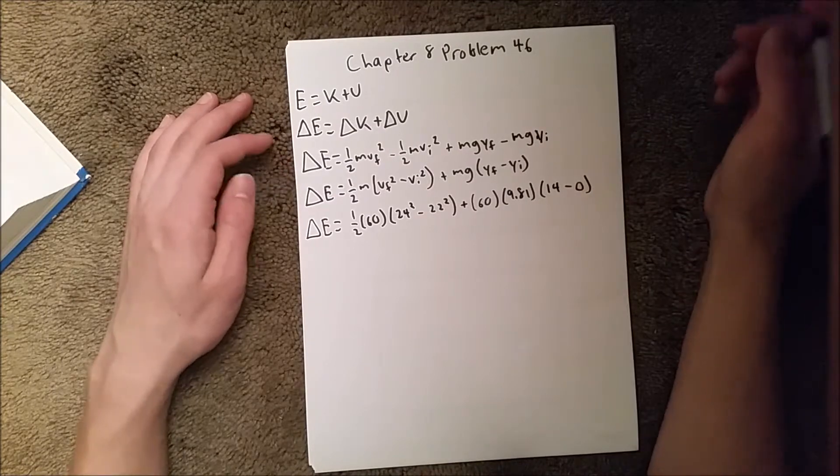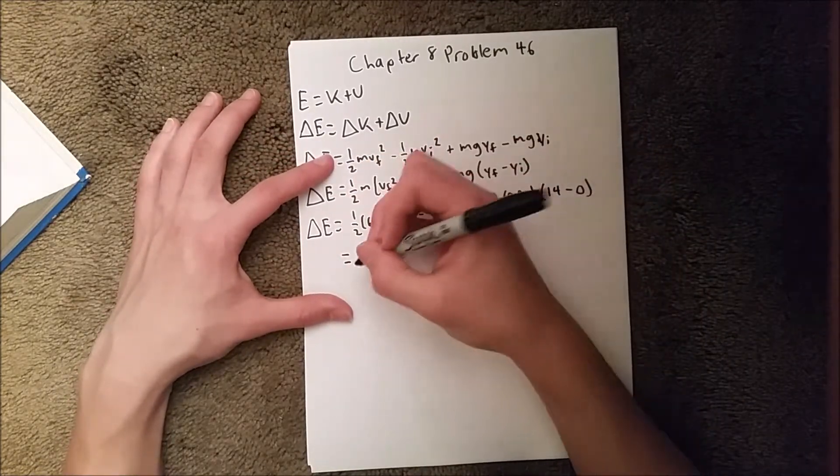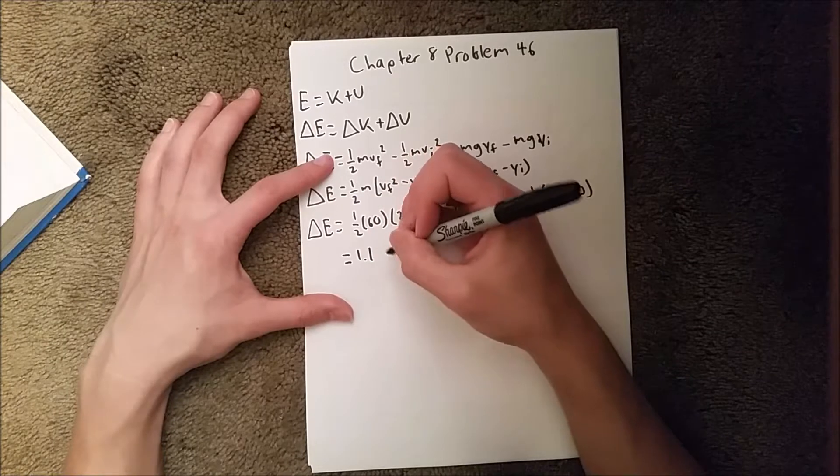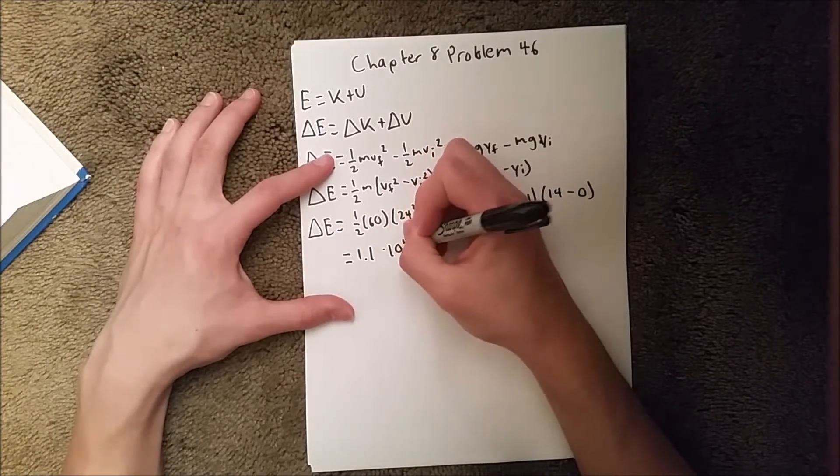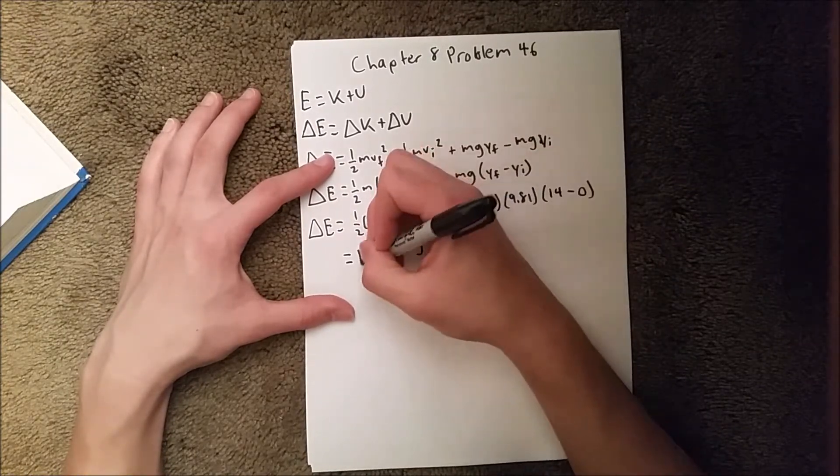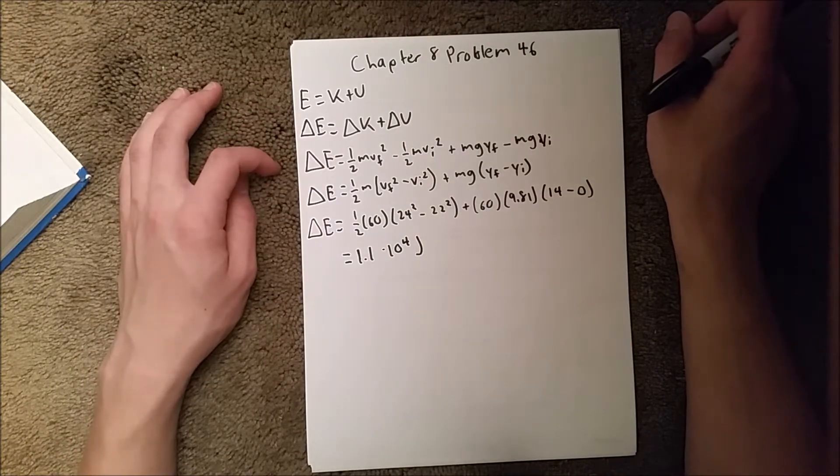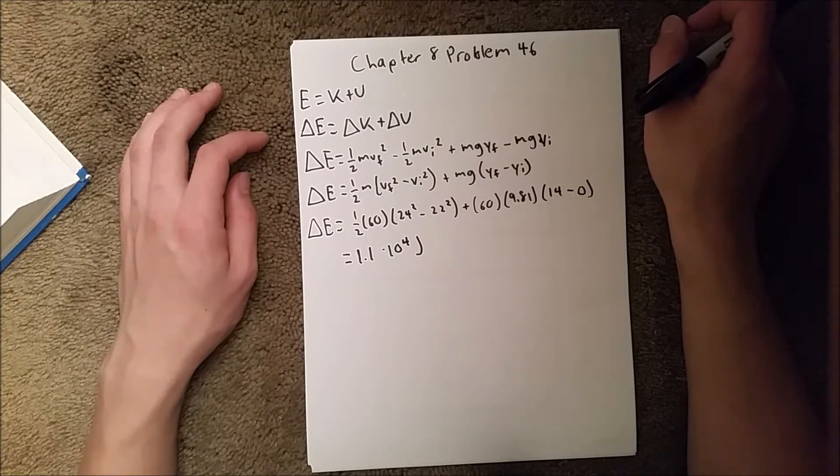But nonetheless, when you do that, you should get 1.1 times 10 to the 4th joules of energy that is lost due to air resistance. So that's it for this problem.